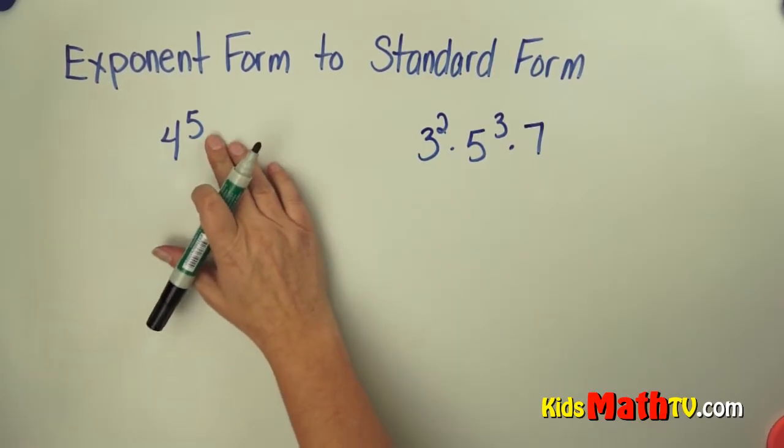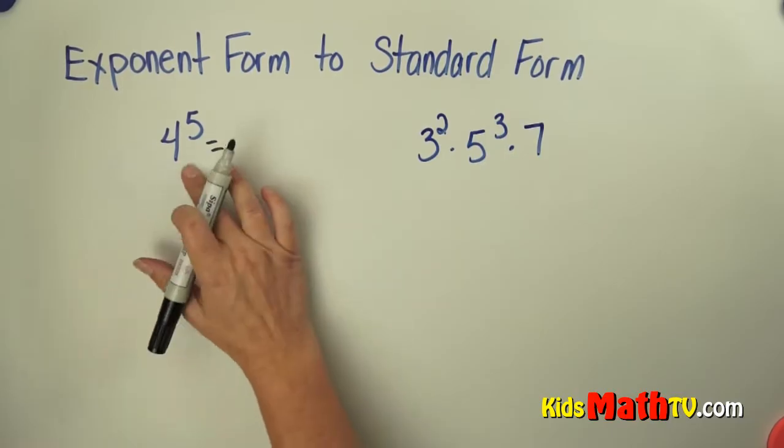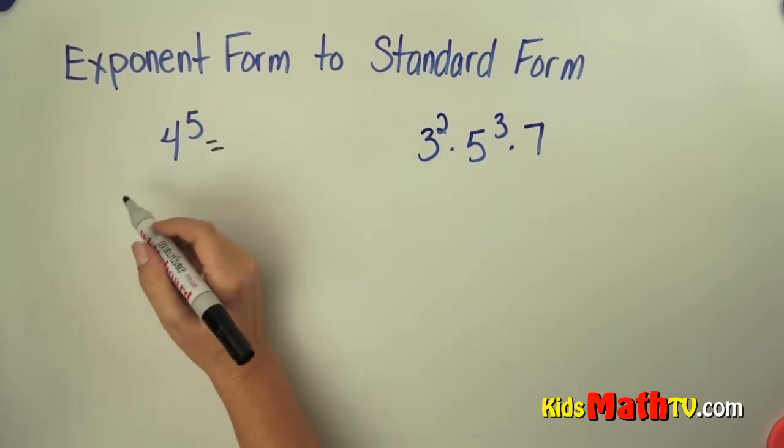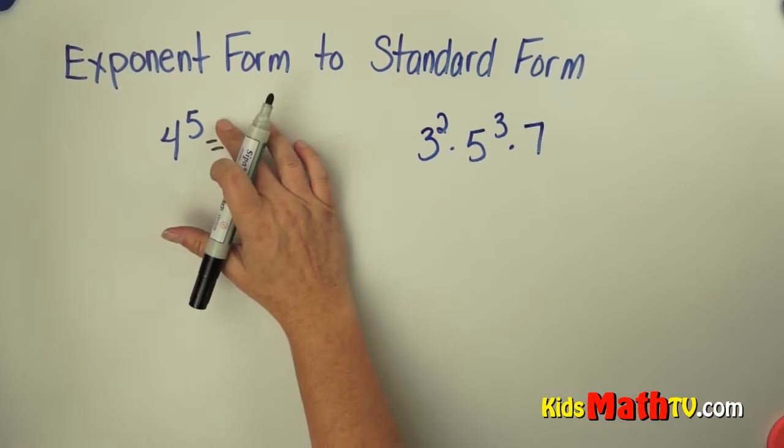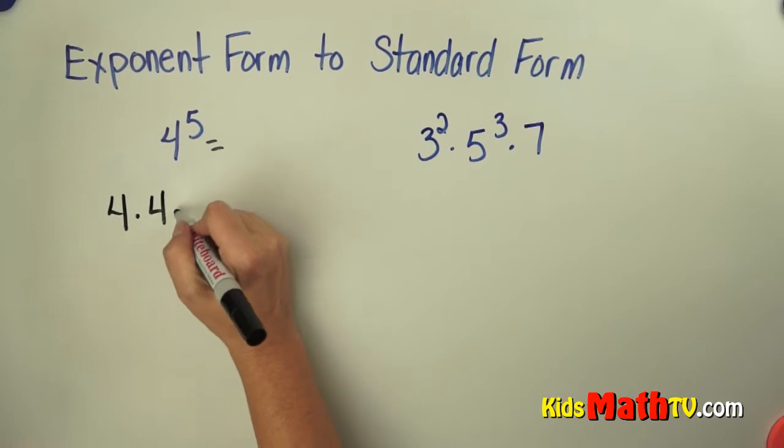So 4 to the 5th power means the same thing as the base of 4 multiplied together 5 times. It's not 5 times 4 or 4 times 5. It's the base 4 multiplied 5 times.